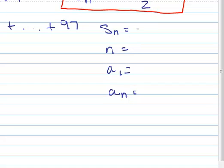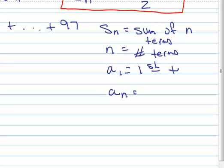So S sub n just means the sum of n terms. n would be the number of terms in the series. A sub 1 is your first term. And a sub n is your last term.